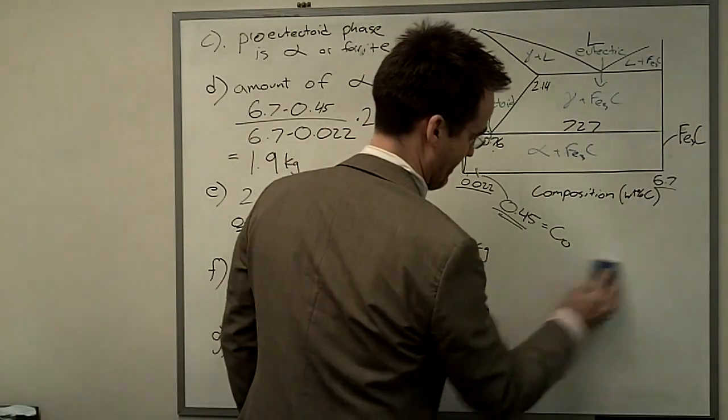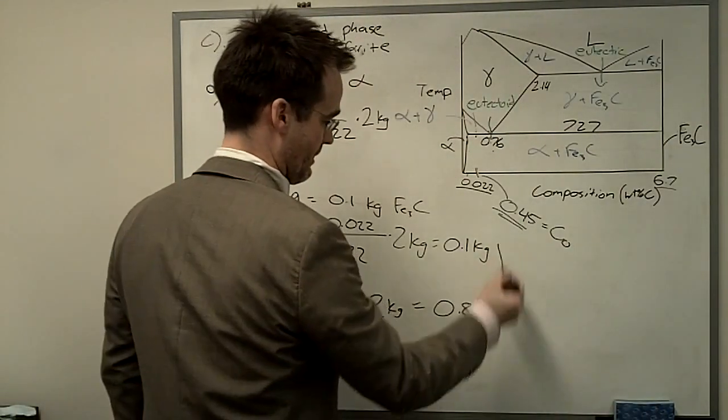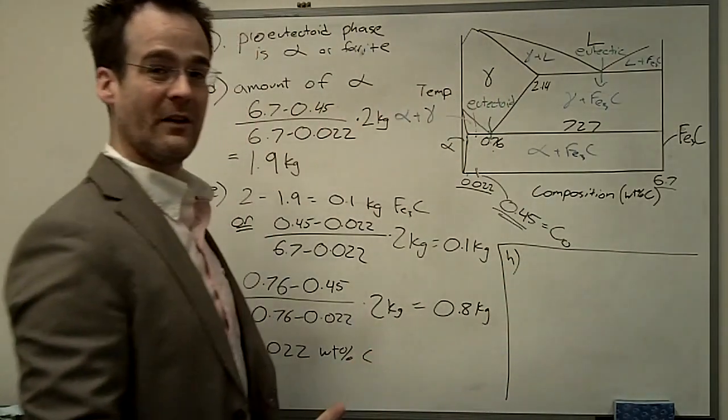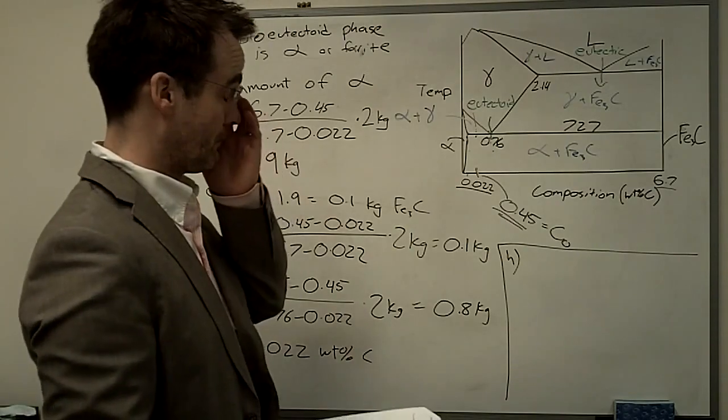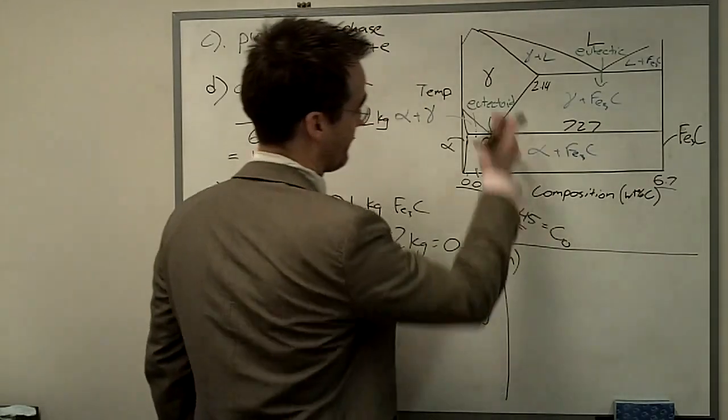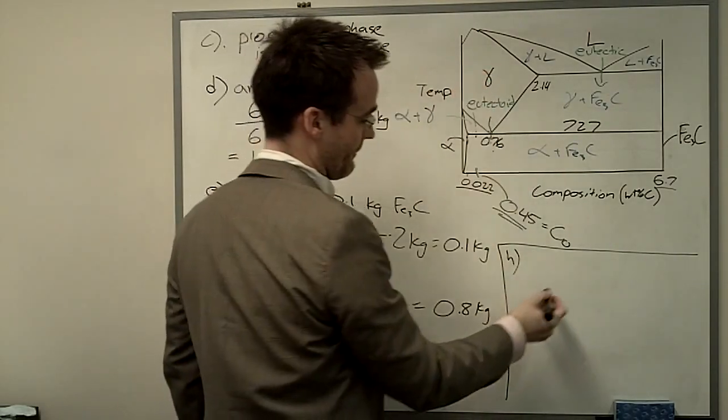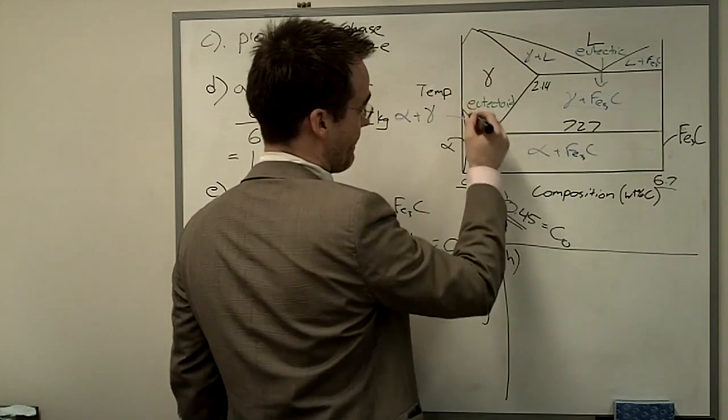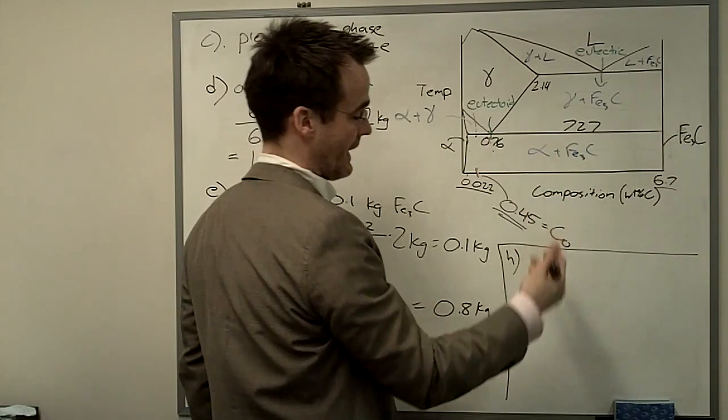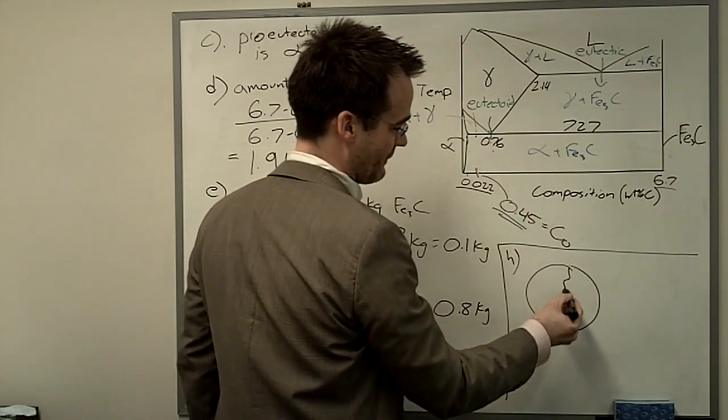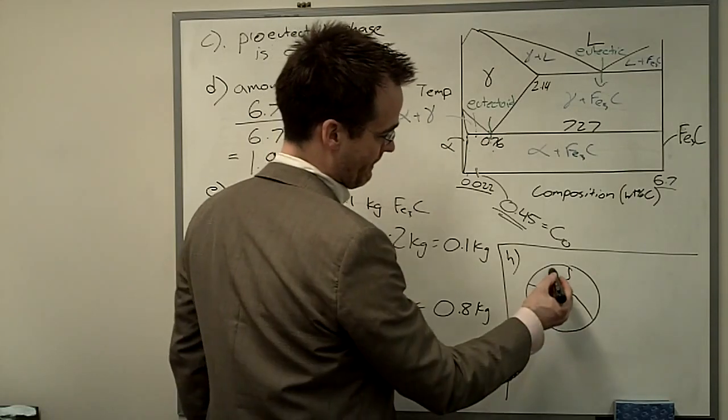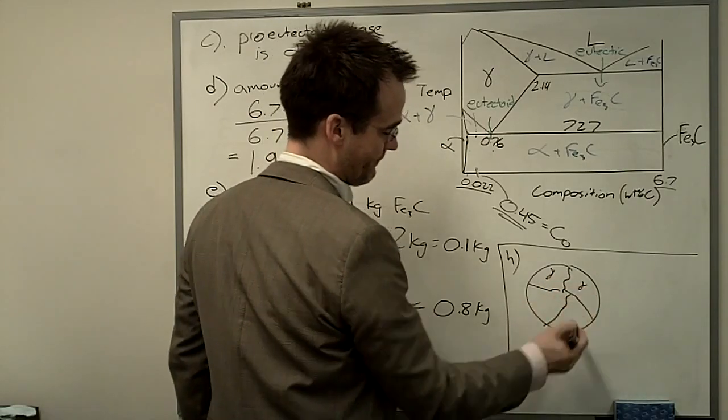Question H, maybe we should have done this to start with. It asks us to draw the microstructure. So let's start off with what it's going to look like as we come down above this phase boundary right here. So we're just 100% gamma. Well, it's going to look something like this. We're going to have some gamma phase grains. These are all gamma, initially.